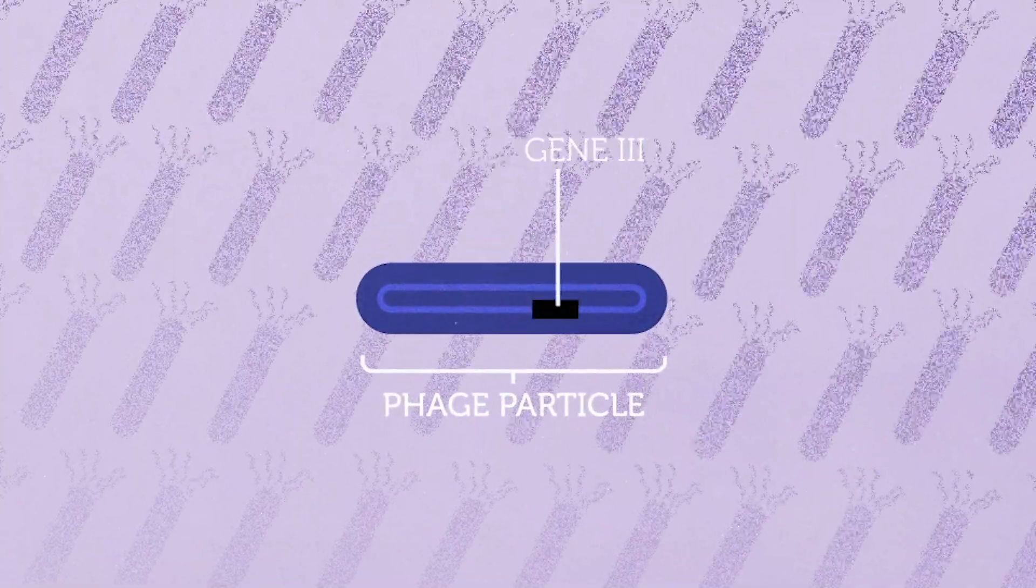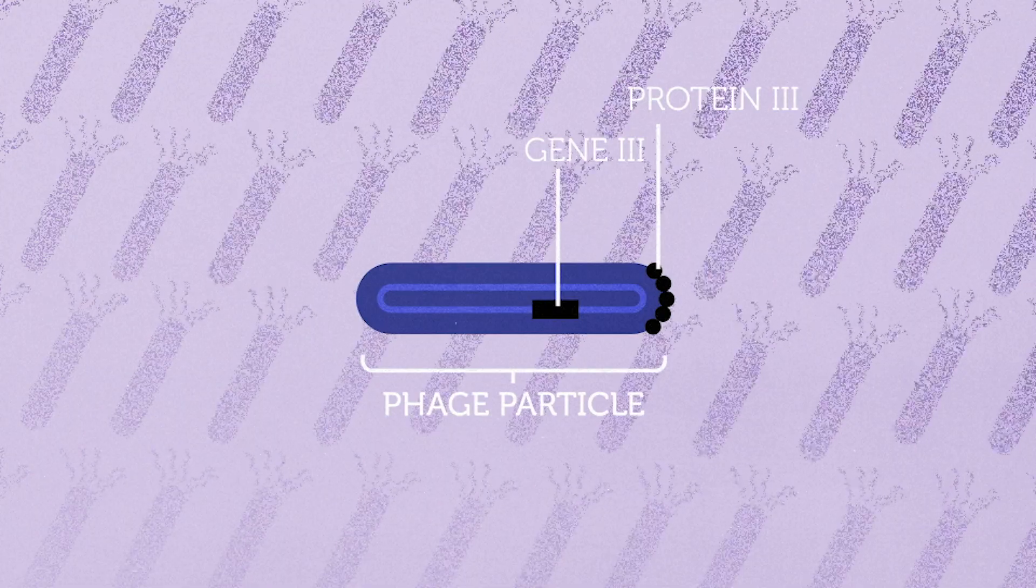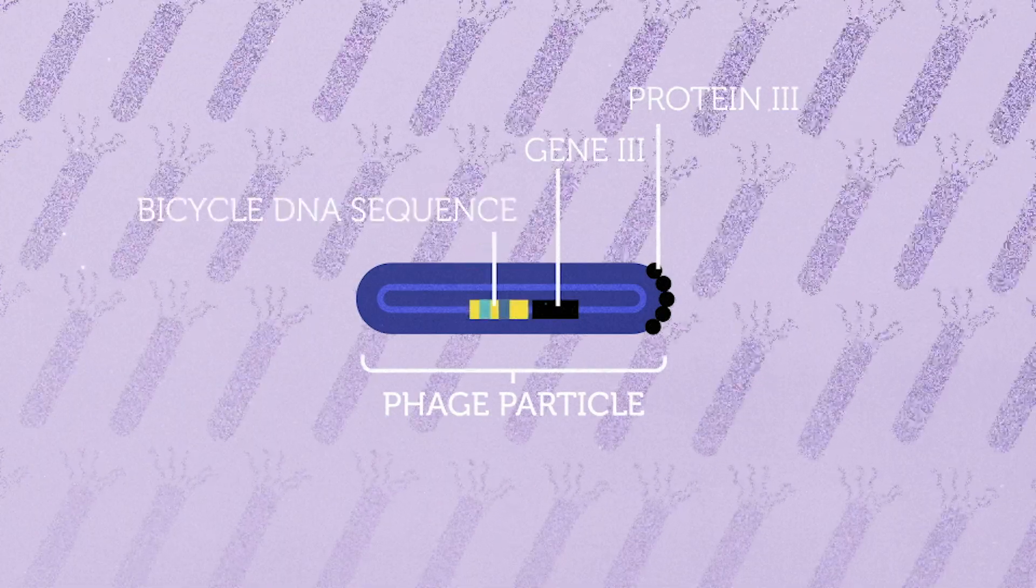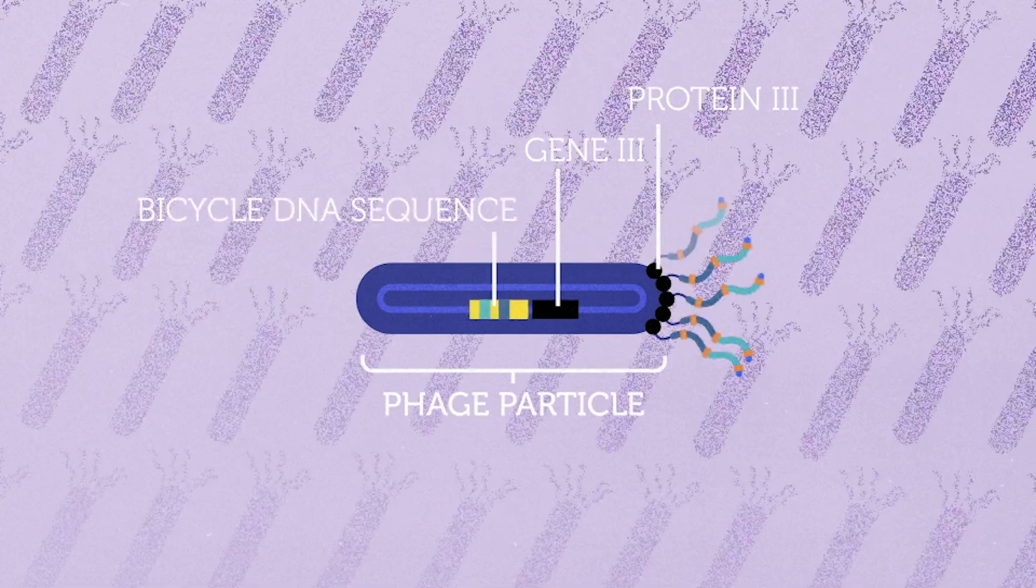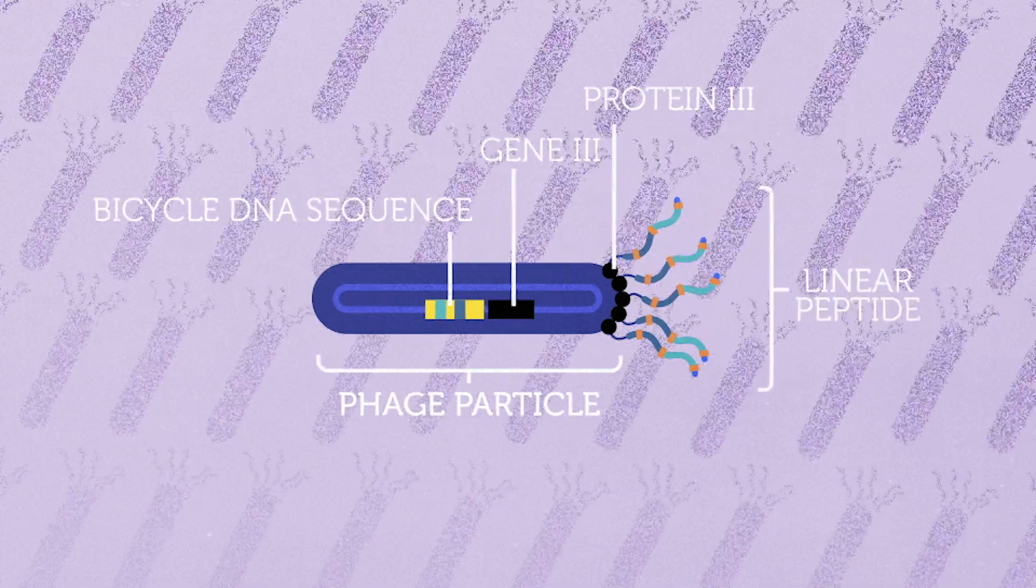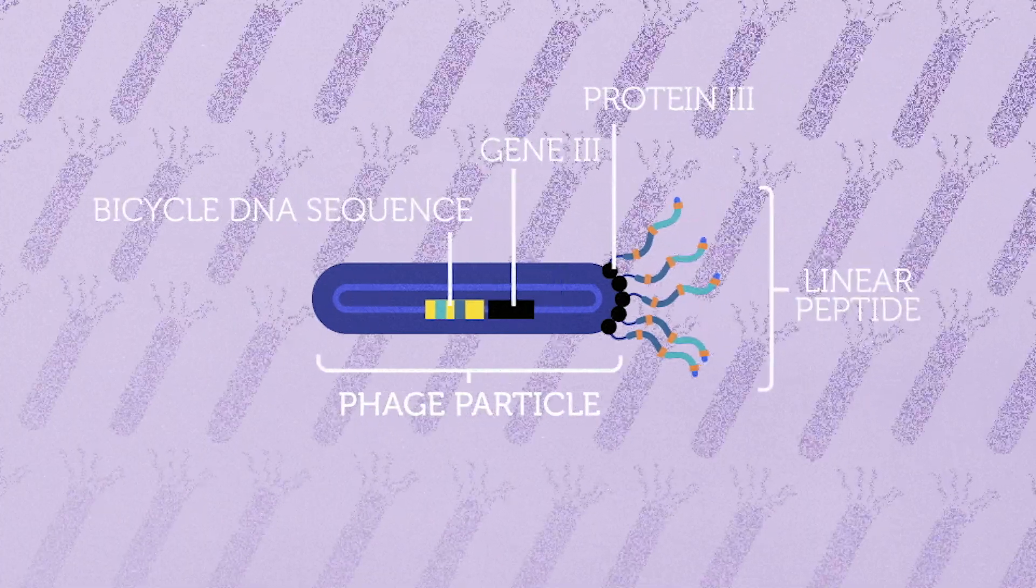In the phage display technique, a gene encoding a protein of interest is inserted into a phage coat protein gene, causing the phage to display the protein on its outside while containing the gene for the protein on its inside.